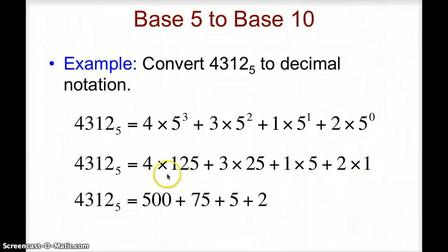Next, we will do the multiplication. We will multiply each power of 5 by the digit that corresponds to its precise place value. In this case, we have 4 times 125 equals 500, 3 times 25 is 75, 1 times 5 is 5, and 2 times 1 is 2.